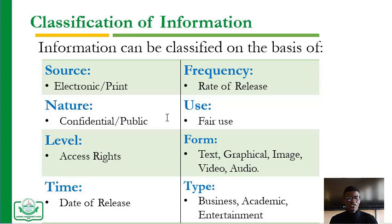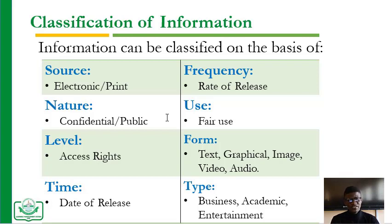The second classification is the nature. The kind of information being released — is it confidential or is it for the public? Confidential means something that is private, and if something is private or confidential, it is not for public consumption.